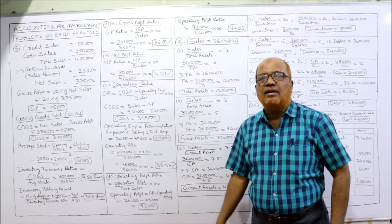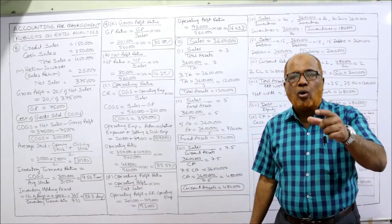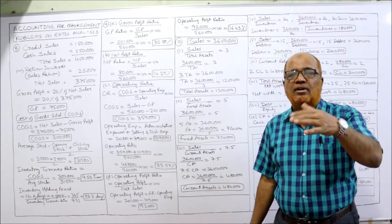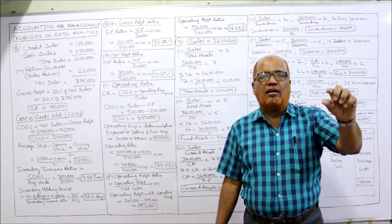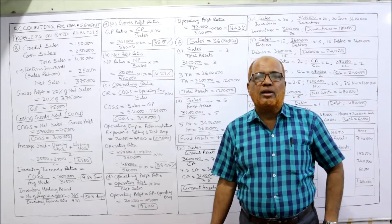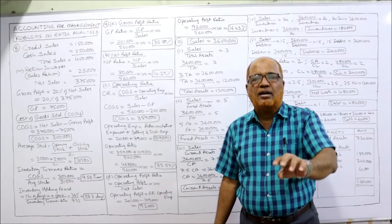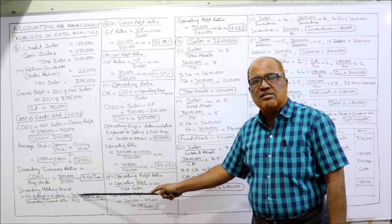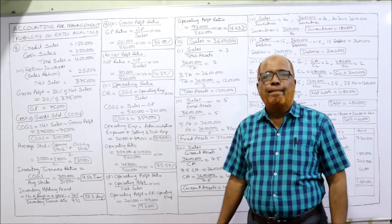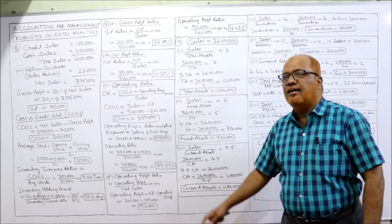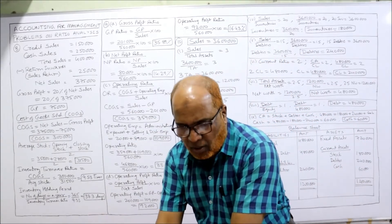For inventory holding period — how many days the inventory takes to convert into sales — the formula is number of days in a year divided by inventory turnover ratio. So 365 divided by 9.53 equals 38.3 days. This means the inventory is converted into sales every 38 days. That is the inventory holding period. Problem number 8 is complete.